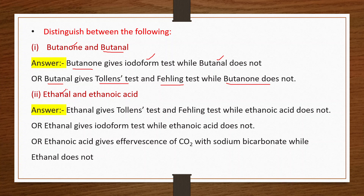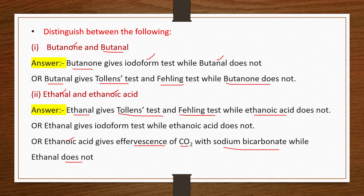To distinguish ethanal from ethanoic acid: ethanal (an aldehyde) gives Tollens test and Fehling's test while ethanoic acid does not. Ethanoic acid is a carboxylic acid, so it gives effervescence of carbon dioxide with sodium bicarbonate while ethanal does not. Also, ethanal gives the iodoform test while ethanoic acid does not.